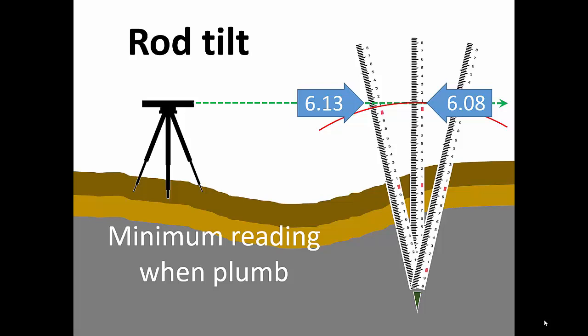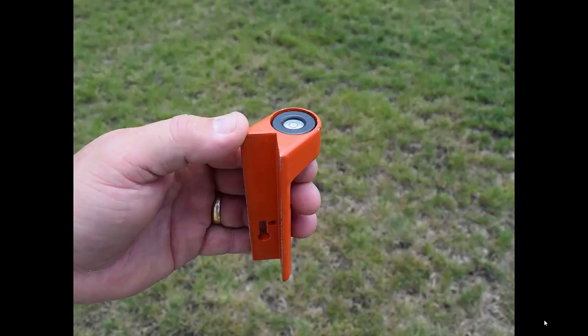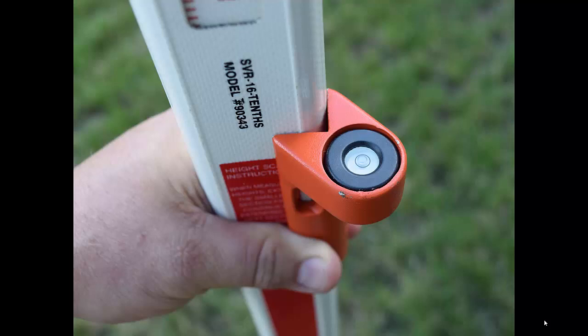So how can we ensure the rod is vertical? There are two common methods. First, this small device, often called a rod level, when held against the rod, uses a circular level vial to indicate when the rod is plumb.